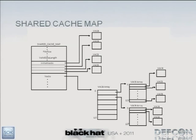Here's a conceptual graphic of what the shared cache map looks like — the bottom shows a two-level-deep example. By parsing this structure, we get all file data present in the cache.